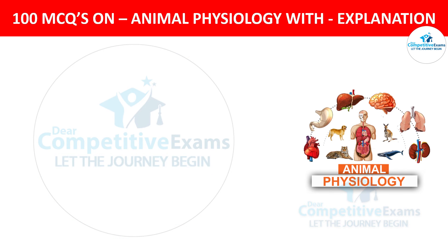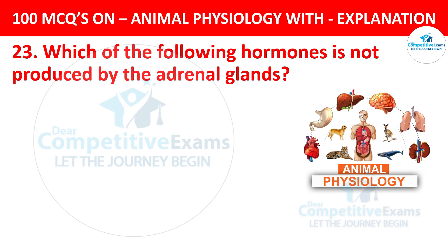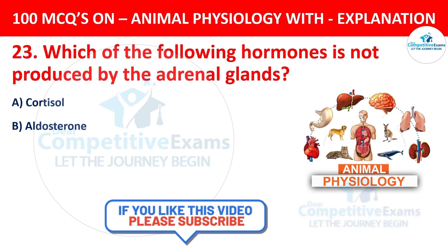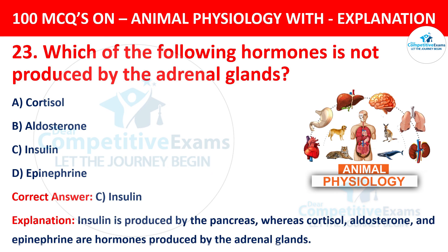Question number 23. Which of the following hormones is not produced by the adrenal glands? The options are cortisol, aldosterone, insulin, or epinephrine. The correct answer is C, insulin. Insulin is produced by the pancreas, whereas cortisol, aldosterone, and epinephrine are hormones produced by the adrenal glands.